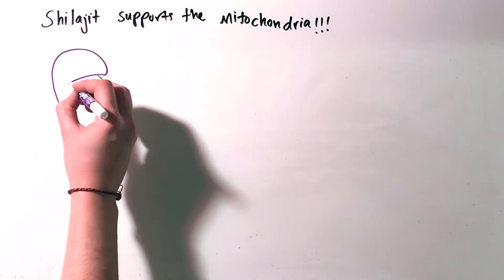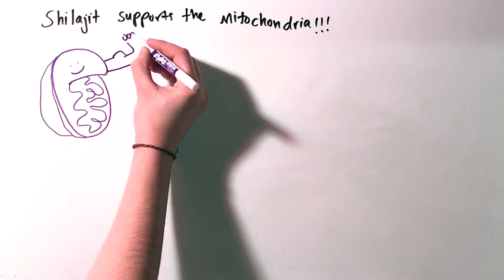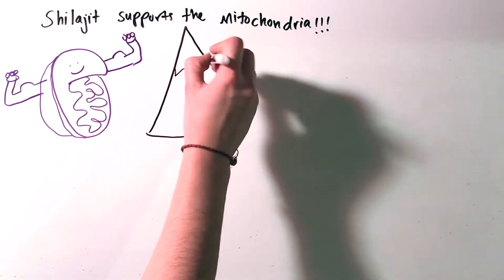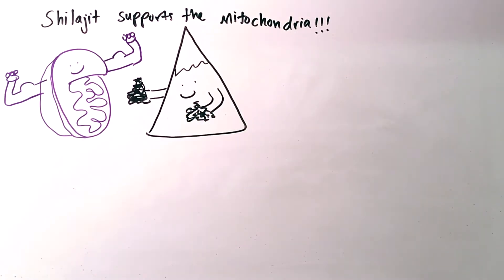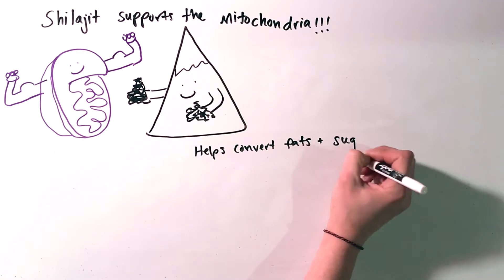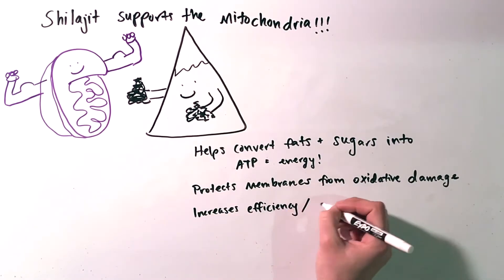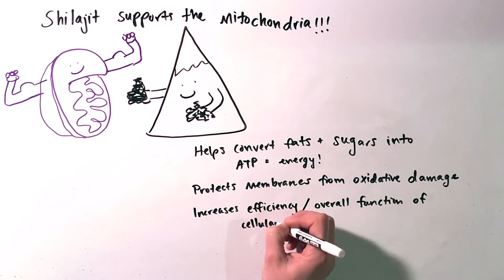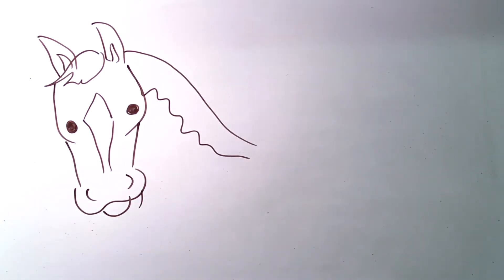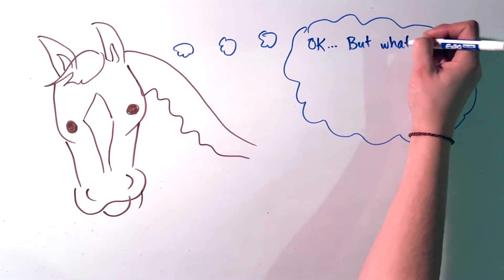Shilajit translates to conqueror of mountains and destroyer of weakness. On a molecular level, shilajit is especially helpful in supporting the mitochondria. It helps convert fats and sugars into ATP for energy. It protects the mitochondrial membranes from oxidative damage and it increases the efficiency and overall function of mitochondrial and therefore cellular processes. Now that we've talked about what shilajit is, let's bring it back to what it means for your horse.